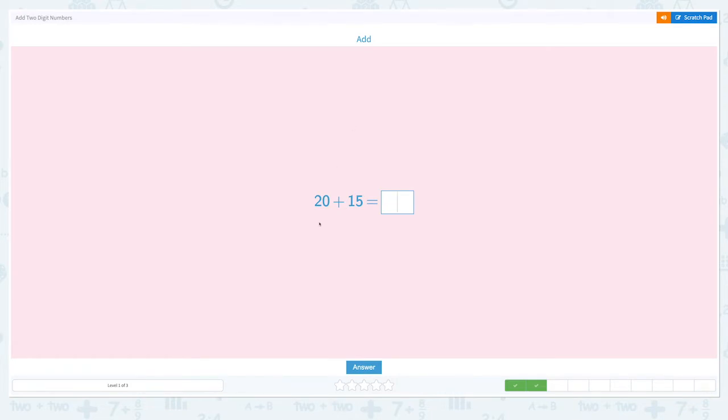Add 20 plus 15. Now let's use base 10 blocks for this one. I can write 20 as 2 tens. That's it.